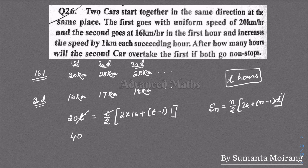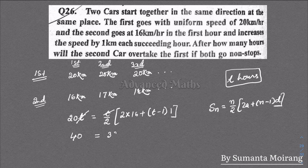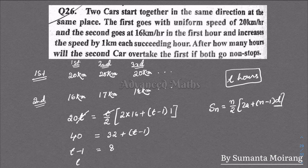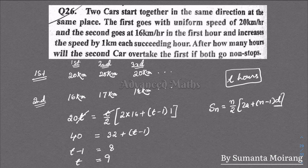Setting the distances equal: 20t = t/2[2(16) + (t-1)(1)]. Solving this equation gives t = 9 hours.